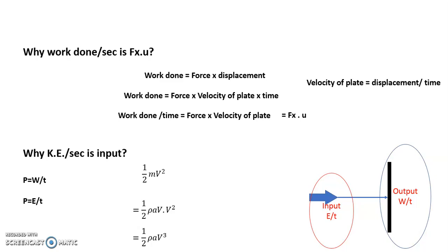This is the input characteristic, and hence the absolute velocity is taken, not the relative velocity. Kinetic energy per second is always one-half rho A v cubed. To summarize, the efficiency of the jet equals work done per second, which is Fx into u, divided by kinetic energy per second, which is one-half rho A v cubed. The formula for Fx may vary for different cases — a vane, a straight plate, or an inclined plate — but the denominator, one-half rho A v cubed, always remains the same.